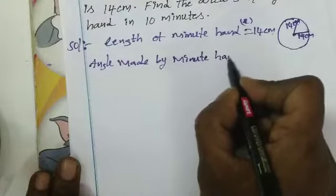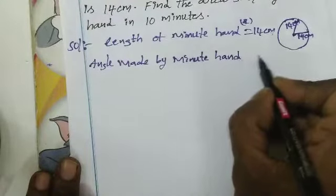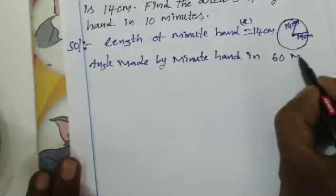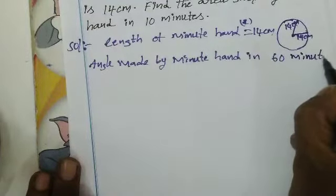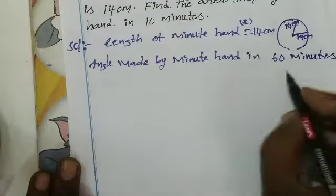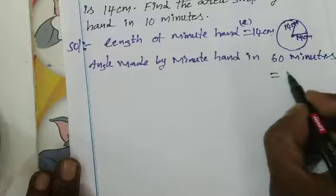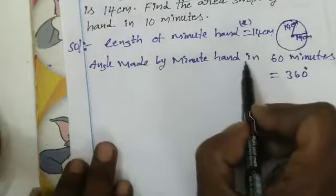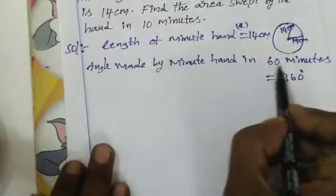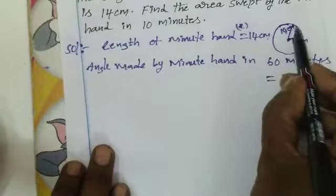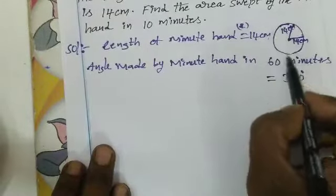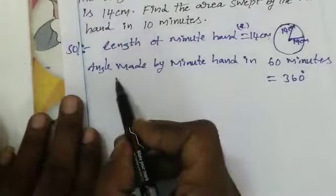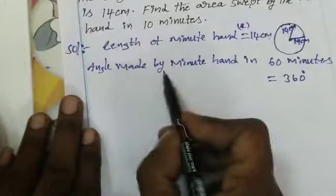The minute hand completes 360 degrees in 60 minutes. So the angle made by the minute hand in 60 minutes equals 360 degrees.